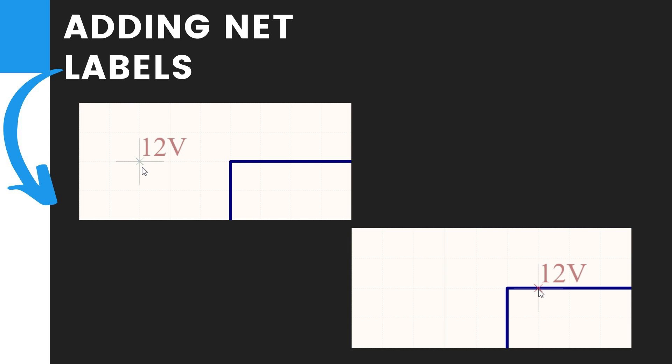Next, to edit the Net Label before it is placed, press Tab to open the Properties panel. Then third, type 12V or 12V in the Net Name field, then click the Pause button to return to Object Placement.